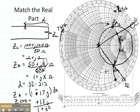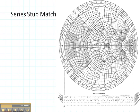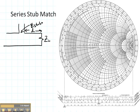Now in our next picture, we're doing a series stub match like this. We have rotated our distance D so we know what D is and we know what the input impedance of the stub needs to be. And that is j1.7 normalized.